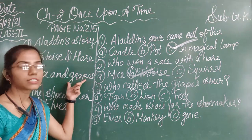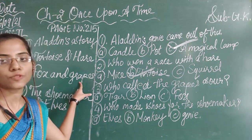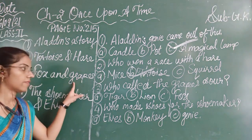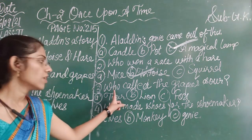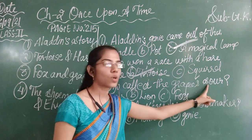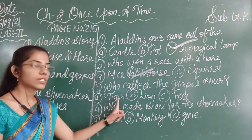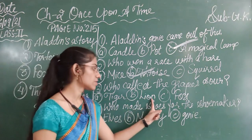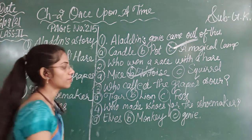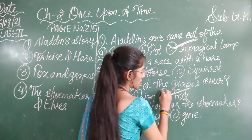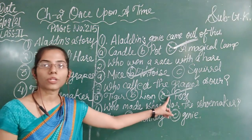The message being conveyed here is that it's easy to despise what you cannot have. Related to this, the question given is: 'Who called the grapes sour?' The first option is tiger, the second is lion, and the third is fox. Based on the story, the correct answer is fox — option number C.